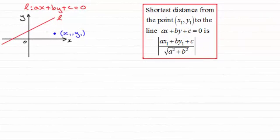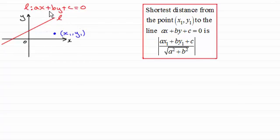Hi there. In this video I want to show you how we go about finding the shortest distance from a point with coordinates x1, y1 to a line L given by ax plus by plus c equals zero. That shortest distance, which I'll call d, is going to be a perpendicular to the line. d is given by this formula here.